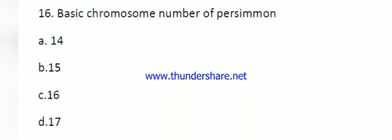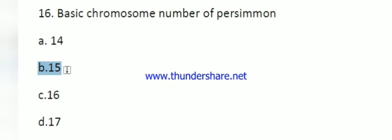Question number 16: basic chromosome number of persimmon. The somatic chromosome number of persimmon is 90, and it is an allohexaploid in nature. That's why the right answer is 15.